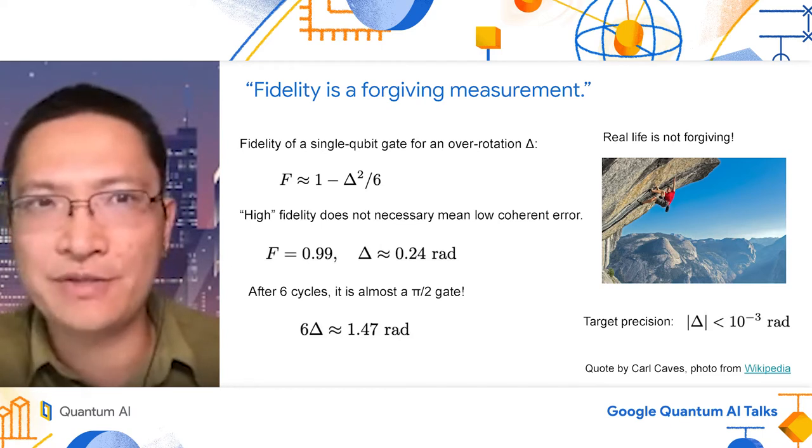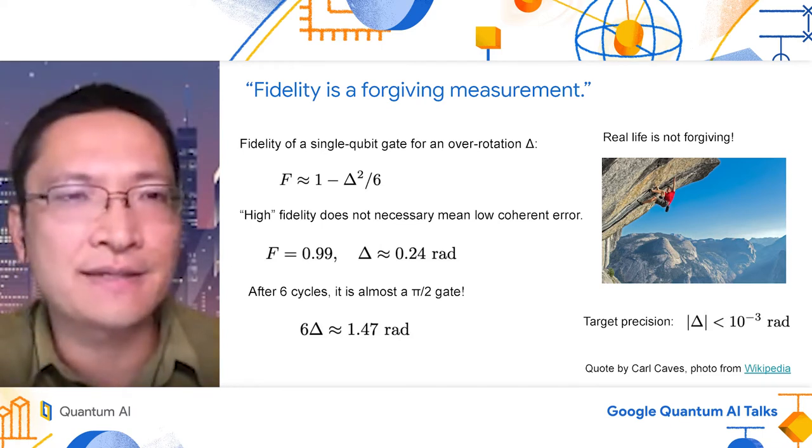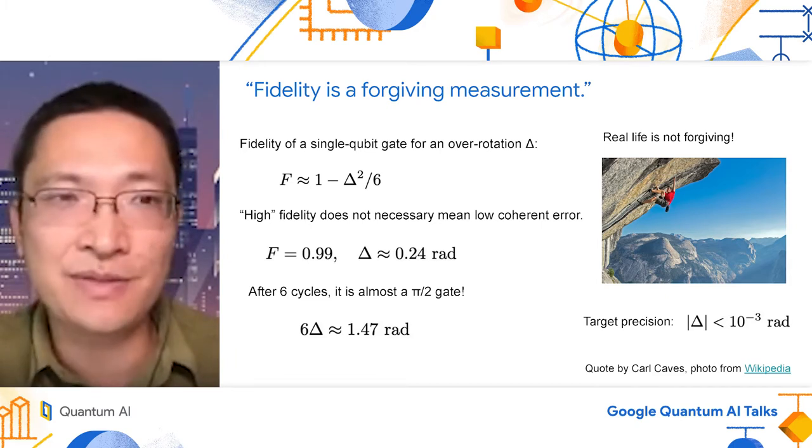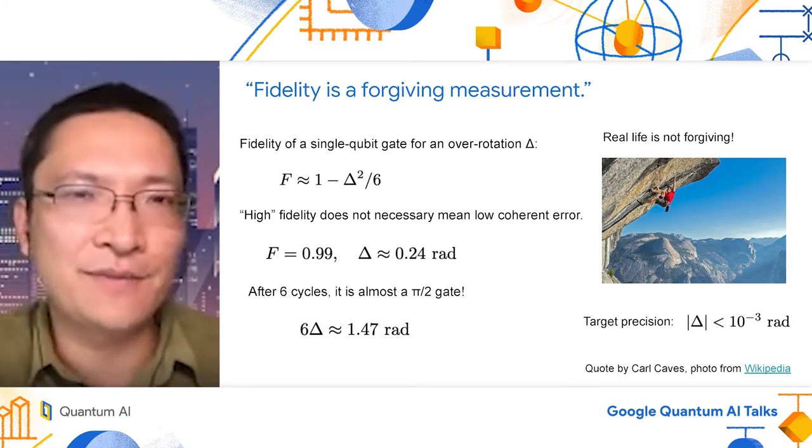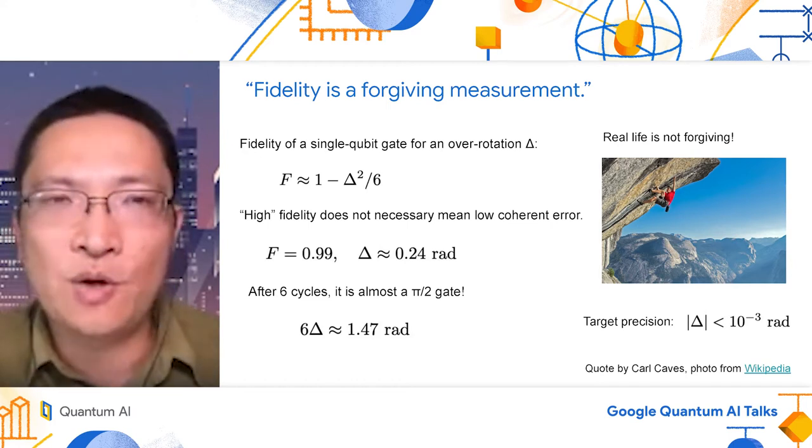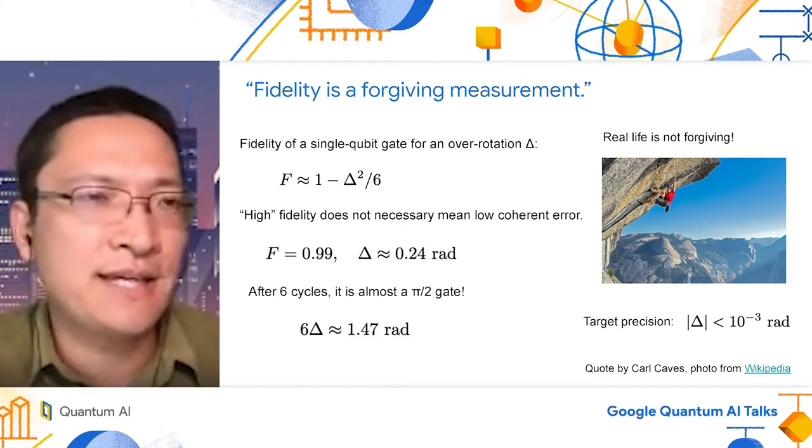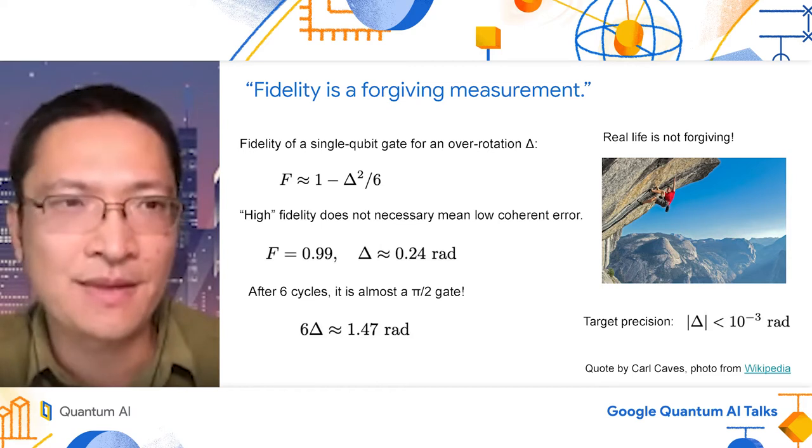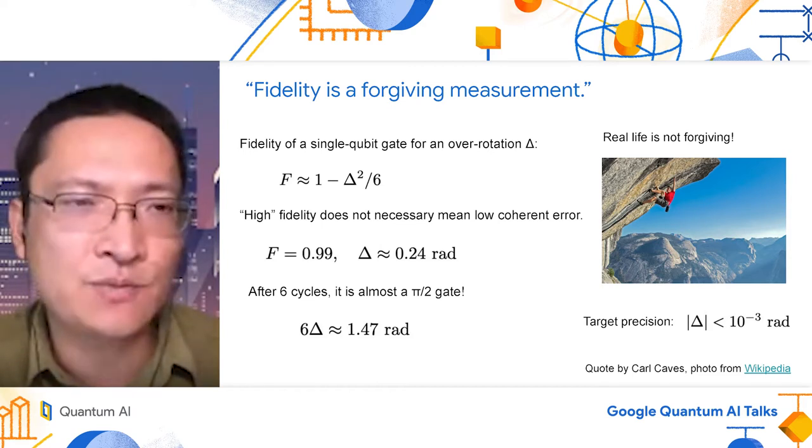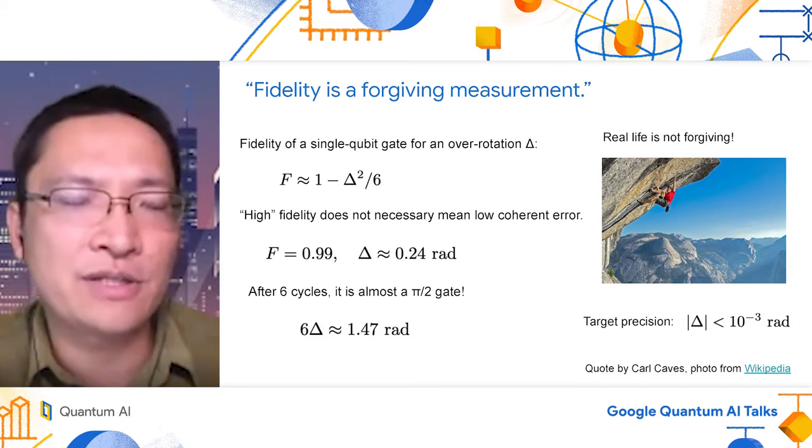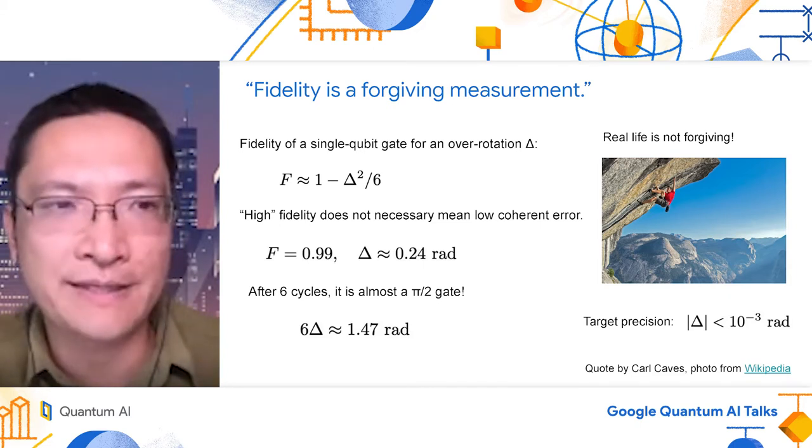When I was a graduate student, I thought a gate with fidelity 99% is a good gate. However, I was wrong. For a small overrotation delta, the fidelity of a gate can be written as 1 minus delta squared over 6. And for a gate with 99% fidelity, the error is approximately 0.24 radians.